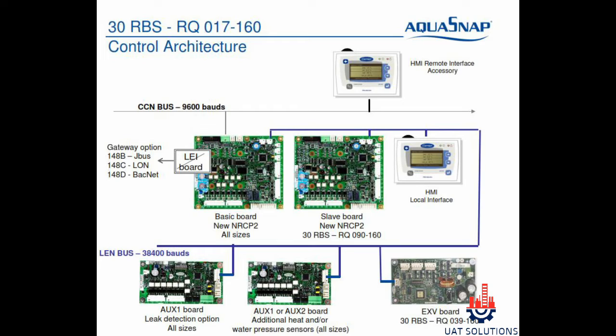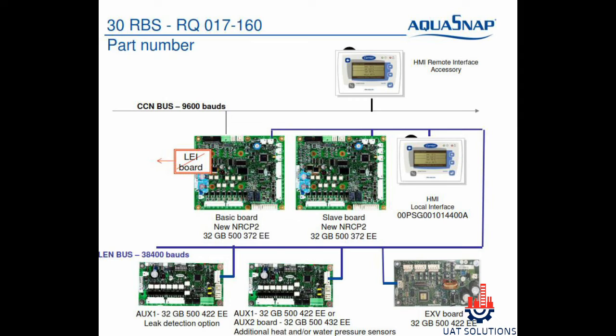The expansion valve module is only used in 039 to 080 ton models; lesser than this, a TXV valve is used. LEN bus style is used at 38400 baud rate for communication between the modules. The basic board or NRCP2 is used in all 30RBS chiller models, and the slave board is used in case there are two circuits or more than two compressors in the chiller.